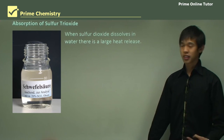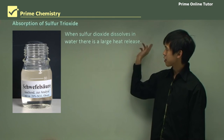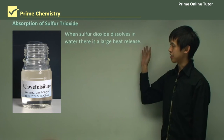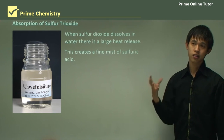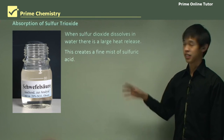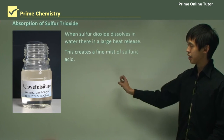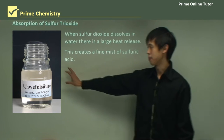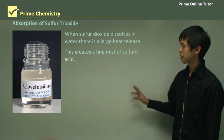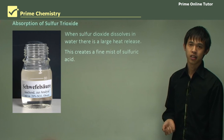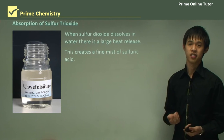Once we've got that sulfur trioxide, we could dissolve it in water — but what happens is there's a large heat release. This creates a fine mist of sulfuric acid: when you pump the sulfur trioxide into the water it releases a lot of heat, which vaporizes the water and creates a mist of sulfuric acid, which is of course dangerous. So we end up with vaporized sulfuric acid that we could breathe in, and that would be a serious problem.